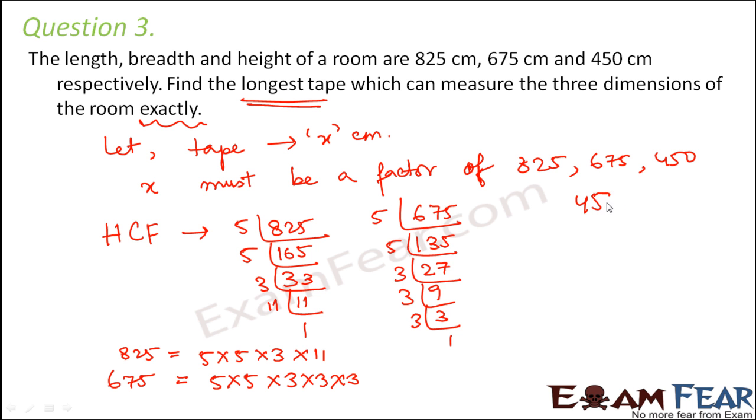Now let us look at the third number which is 450. So 3 into 150, then 3 into 50, and then 5 into 10, then 2 times 5 is 10, then 5 times 1 is 5. So basically 450 can be written as 3 into 3 into 5 into 2 into 5.